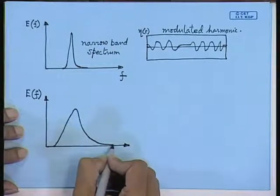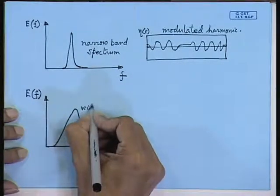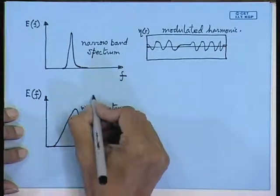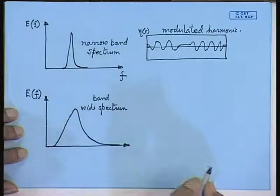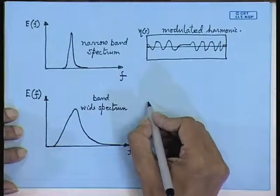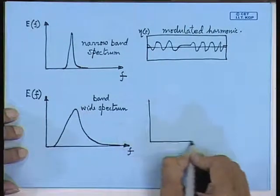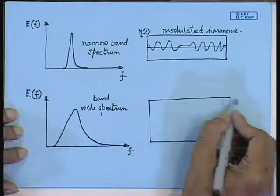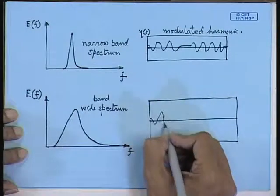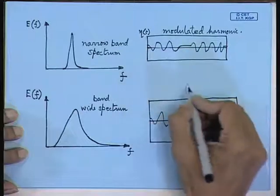Oceanographers and ocean engineers are interested with the nature of this graph. Later on we will see what type of spectra you have to use. This is called a wide band spectrum. In this case, the sea surface is absolutely random — confused in nature. This corresponds to irregular waves.